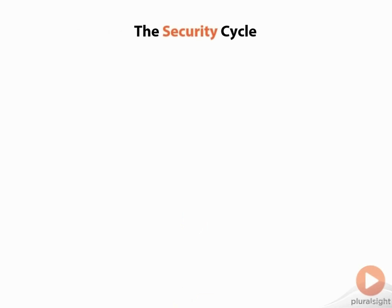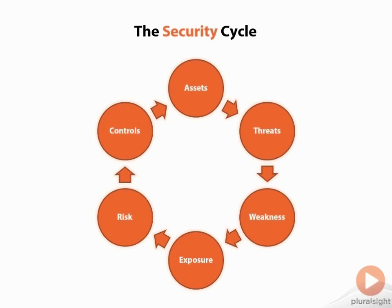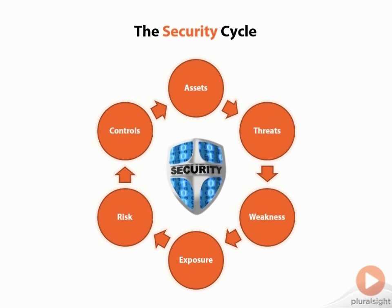Let's take a look at the security life cycle, or security cycle itself. What you see here is basically this kind of revolving door, so to speak. We have assets, threats, weakness, exposure, risk, controls, and assets — it kind of goes around and around. This pertains to what we need to do to secure our assets and the threats and vulnerabilities we associate with that cycle.